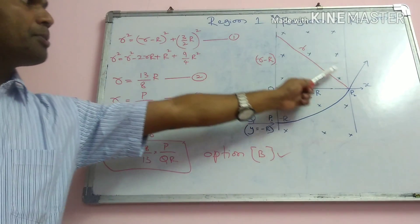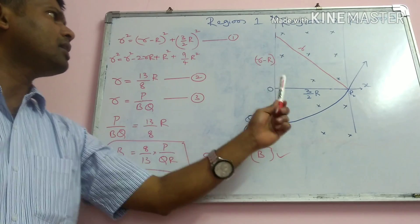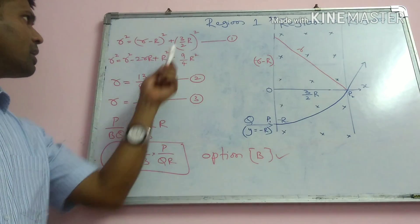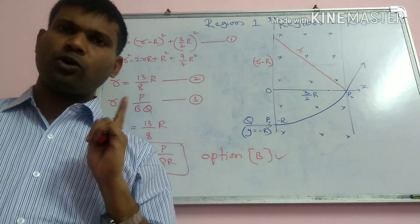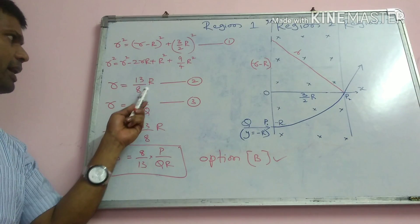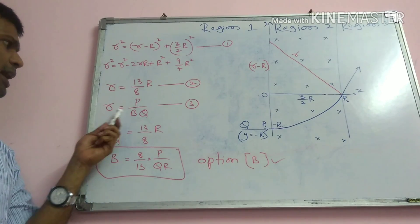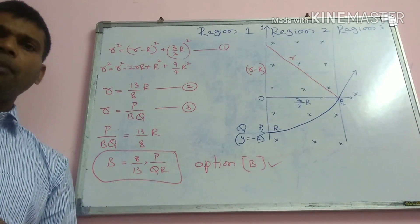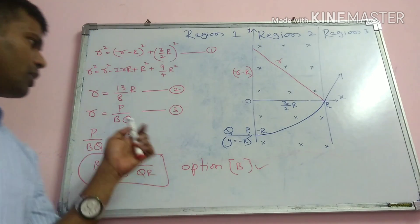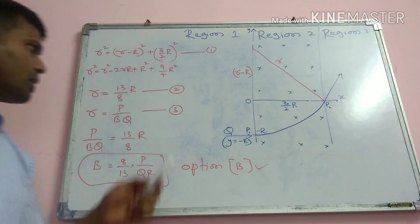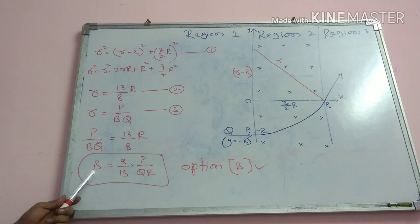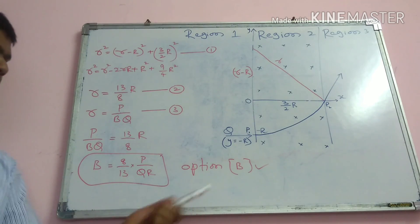In the right-angle triangle, the hypotenuse is r, base is (r - R), and height is 3/2 R. Solving equation 1: r² = (r - R)² + (3/2 R)², giving r = 13/8 R — this is equation 2. Since r = p/Bq (equation 3, the general formula for circular motion in a magnetic field), combining equations 2 and 3: p/Bq = 13/8 R, so B = 8/13 into p/QR. Option B is correct.